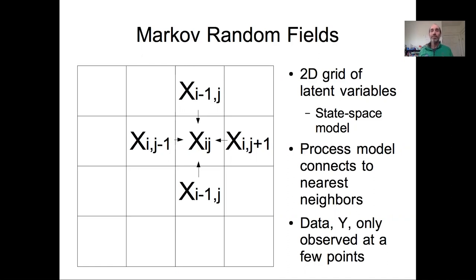And as a reminder, these are the 2D analog of state-space models. State-space models had a process model describing how a process evolves in time. In Markov random field models, you have a process model that describes how things are evolving in space. So that's one thing that really separates this approach of spatial modeling from those based on spatial covariance—there is some spatial component to the process model.